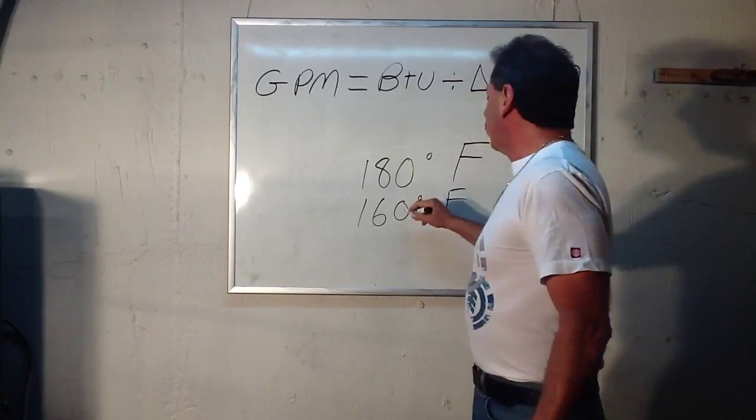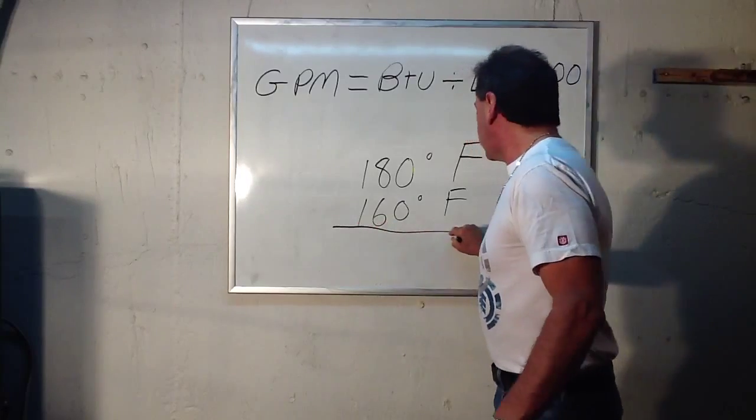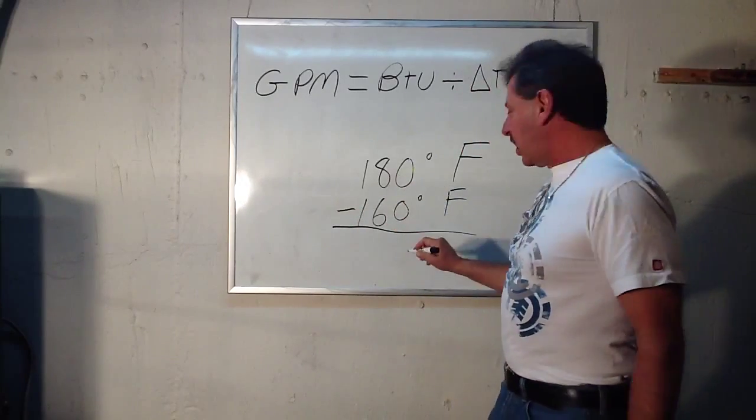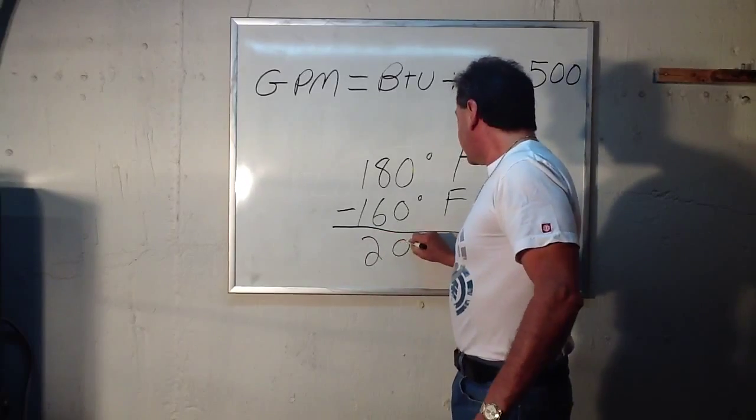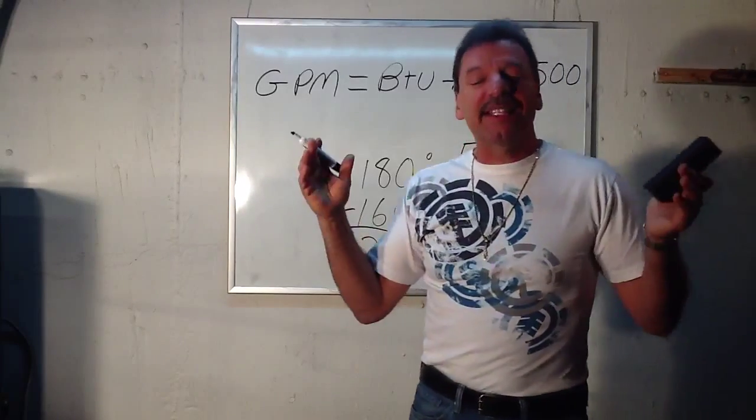So, if you were to do the difference and do the math, 180 minus 160 gives you 20. That's your delta T. That's the difference.